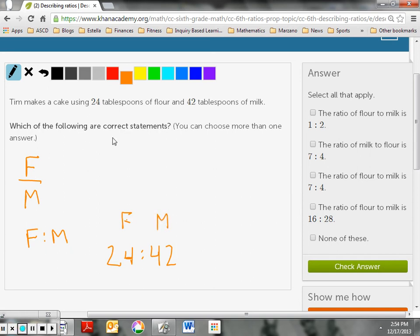Now let's take a look. Which of the following are correct statements? You can choose more than one. Here's the clue here. More than one, guys. It could be more than one. It could be none of them at all. So the ratio of flour to milk is 1 to 2. Now this is what I ask myself. If it's 1 to 2, that means if I take 24 doubled, I will get 42. But 24 doubled is 48. So this will not work.